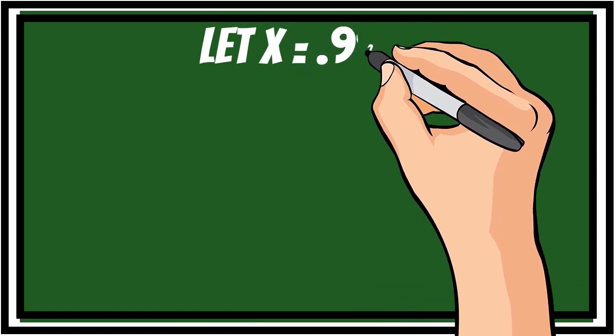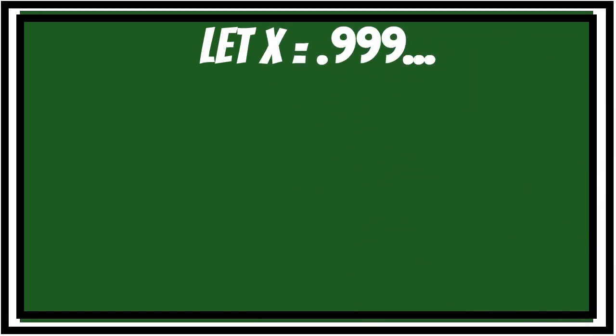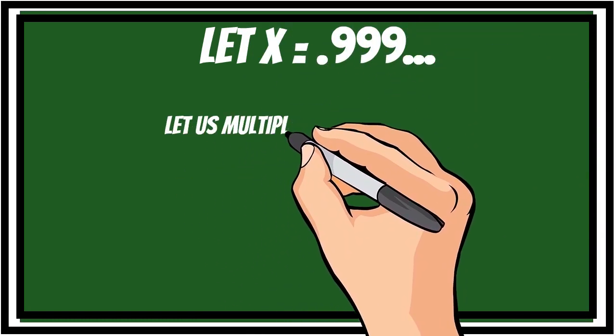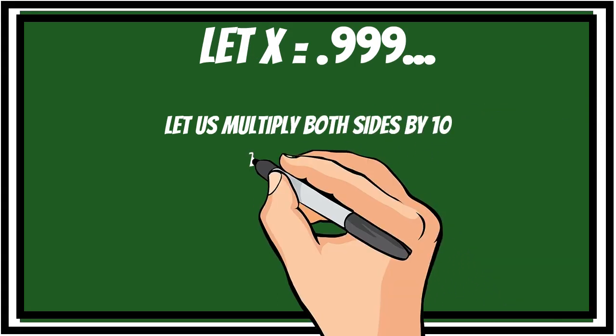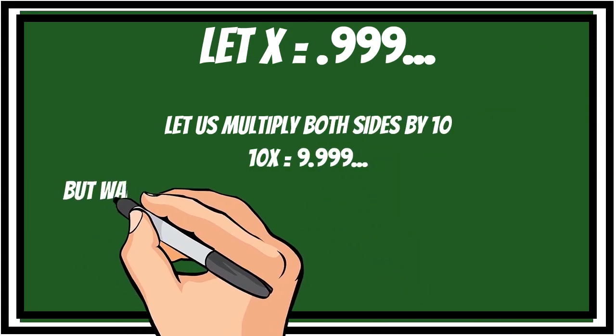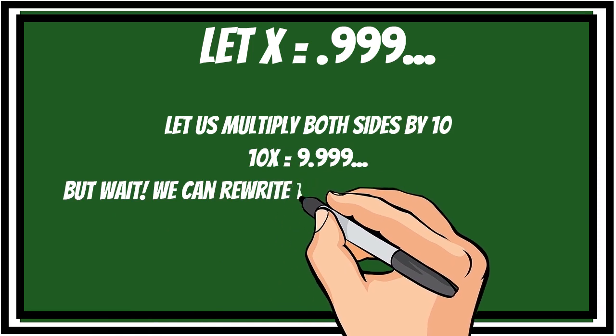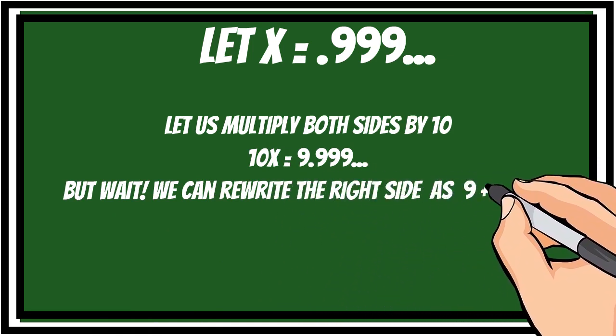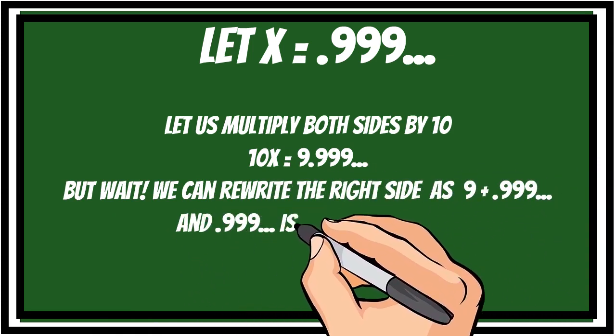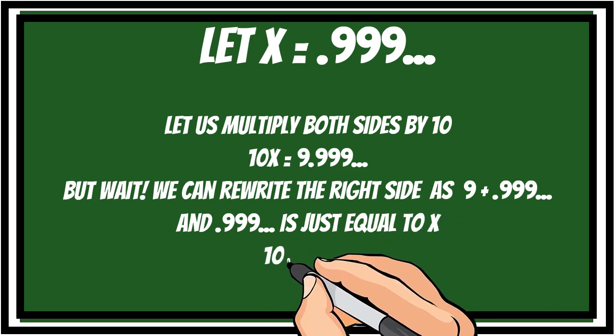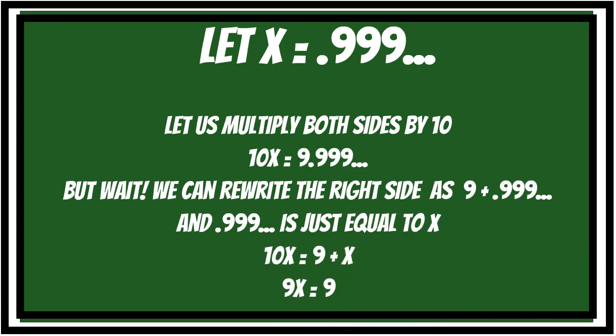Let x equal 0.9 recurring. Let us multiply both sides of this equation by 10. 10x is equal to 9.9 recurring. But wait, we can rewrite the right side as 9 plus 0.9 recurring. And 0.9 recurring is just equal to x.